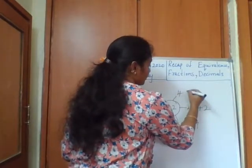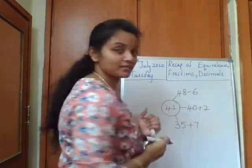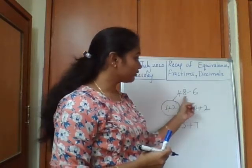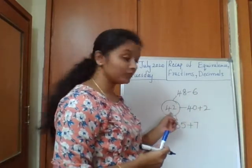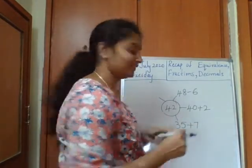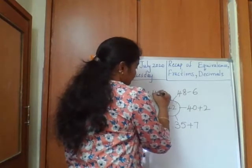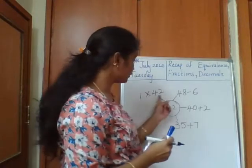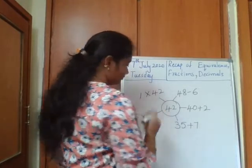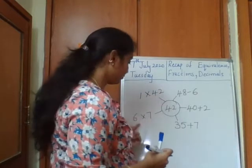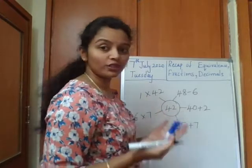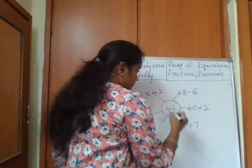Next, 48 minus 6 — here I use the subtraction symbol with two different numbers, 48 minus 6, which again equals 42. For multiplication: 1 times 42 equals 42, since 1 times any number is that number itself. Also, 6 times 7 equals 42 — again two different numbers that when multiplied give 42.